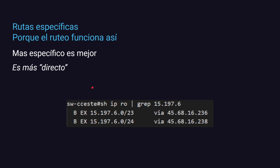Finalmente, rutas más específicas, porque la elección de rutas funciona de esa manera: más específico es mejor. En este ejemplo de un equipo en producción recibiendo rutas de Unixp, tenemos una ruta para un /23 y luego un /24 que está dentro de ese /23. Aunque tengan diferente Next Hop, la ruta /24 es más específica para esa red y va a ser la mejor, aunque la otra incluya la red interior.